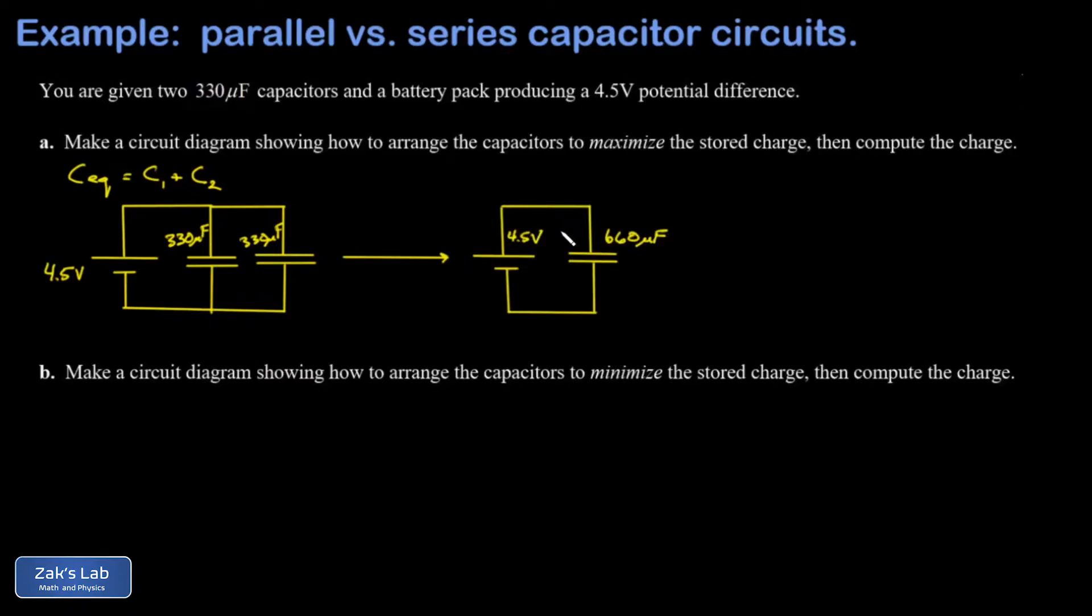Now we can compute the charge stored on this equivalent capacitance of 660 microfarads. We can go back to the formula for the definition of capacitance, that's the charge per volt, and just solve that for the charge and I get q equals CV. We plug in the capacitance of 660 microfarads, we have a potential difference of 4.5 volts.